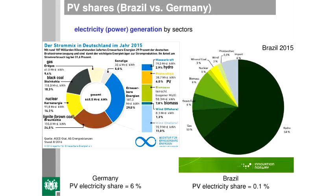It depends on how much water is available in the dams. There was a water shortage last year, and when reservoirs are down and water is needed for supply, they cannot produce electricity. So Brazil also needs to go toward diversity — having shares of different types of energy conversion systems.